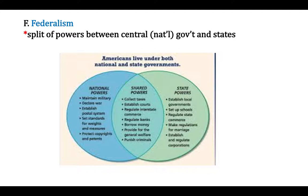We have a 10th Amendment that says all powers not given to the federal government are reserved for the states. Over the course of time, the national government and the states have had a lot of conflict over who the power actually belongs to. For example, the Constitution explicitly says Congress has the power to declare war — that is a national power. It says nothing specifically about marriage, so issues like marriage laws and age of consent go back to the states. That would be an example of a reserved power — a power belonging to the states.